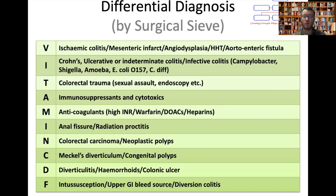Under functional causes, there is diversion colitis. This is where patients who have had a defunctioning stoma — the distal portion can develop colitis and lead to some bleeding. This is usually identified from the history that the patient has had some form of bowel defunctioning operation.